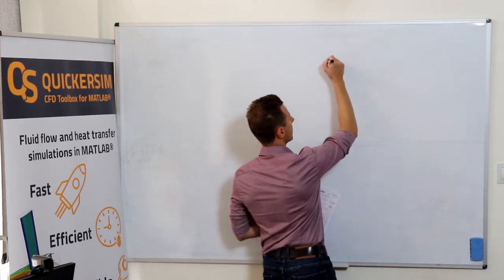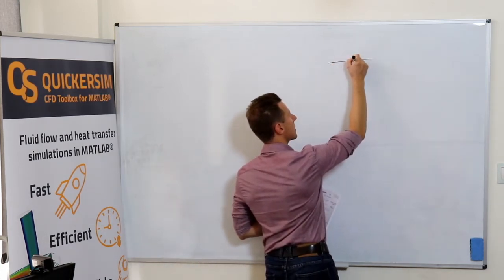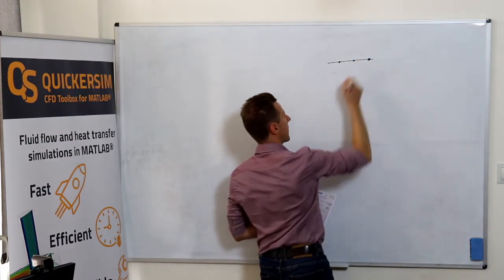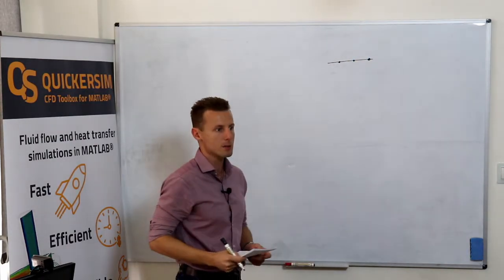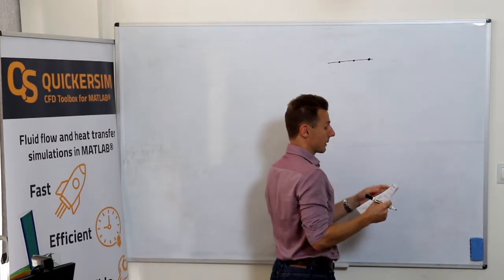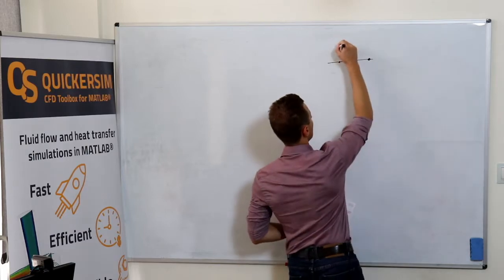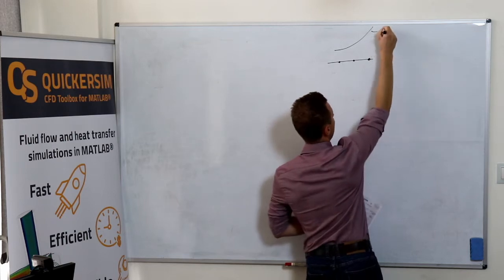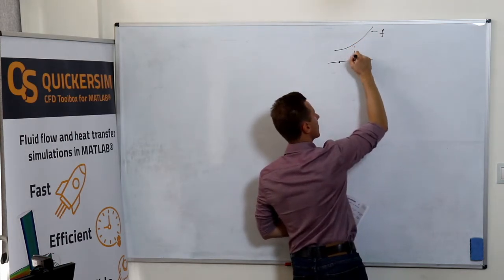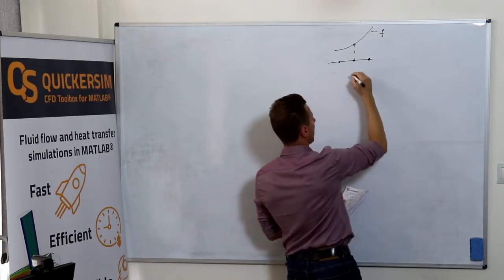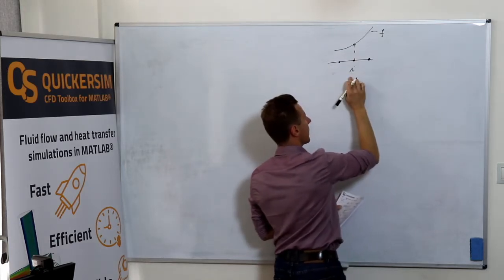Let me start with something like a local space discretization, actually just one axis, one-dimensional discretization. We have some function, let's call the function f, and we've got three nodes: the ith node, i plus 1, and i minus 1.